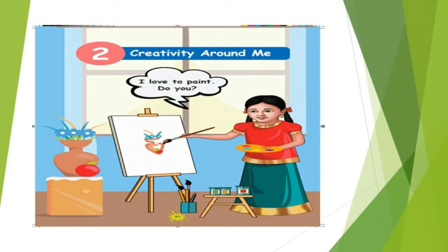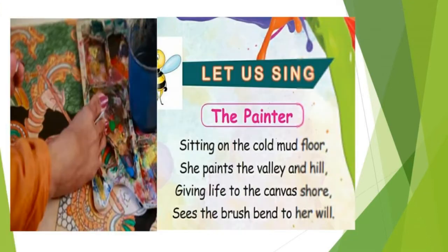In this poem, we are going to learn about the talent of a girl who was physically challenged. Even though she was challenged, she did not stop her hard work. Let me see the poem lines: 'Sitting on the cold mud floor, she paints the valley and hill, giving life to the canvas shore, sees the brush bend to her will.'